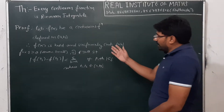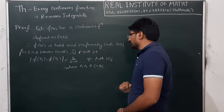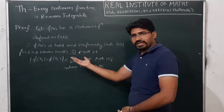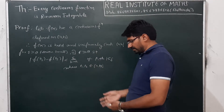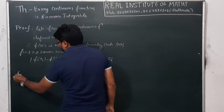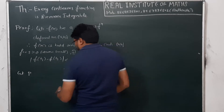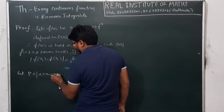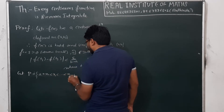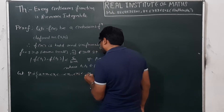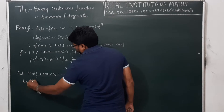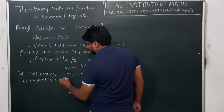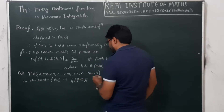We will now apply this definition to Riemann integrability. For that, we have to prove that U(P, f) minus L(P, f) is less than epsilon for some partition P of [a, b]. So let P be the partition of [a, b]: P = {a = x₀, x₁, ..., x_{i-1}, x_i, ..., x_n = b}, such that the norm of partition P is less than delta.